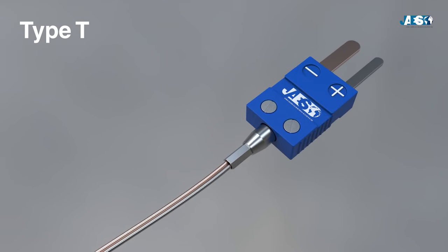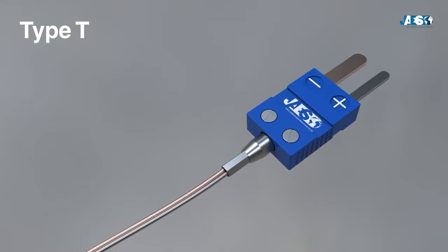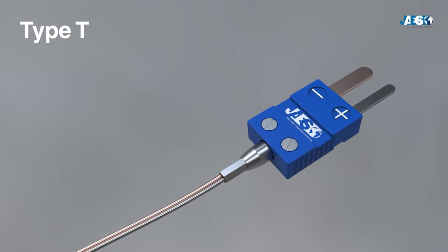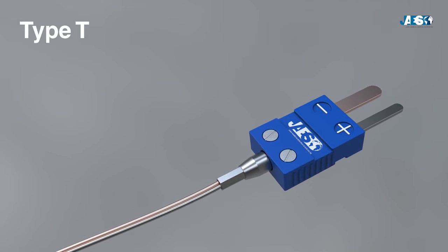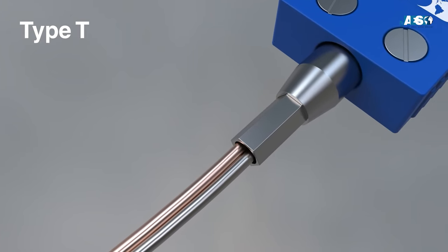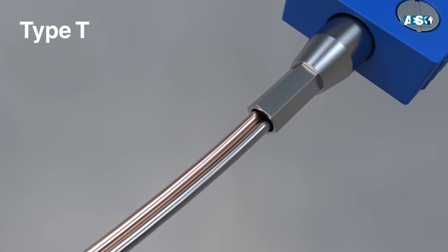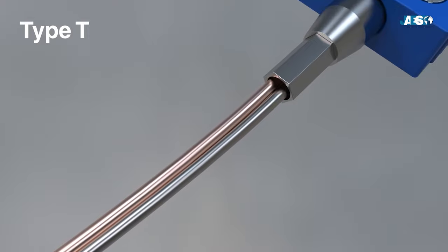The T-type, composed of Copper and Constantan, is very similar to the J model. It perceives temperatures between negative 200 degrees Celsius and 400 degrees Celsius, and is mainly used in laboratories.